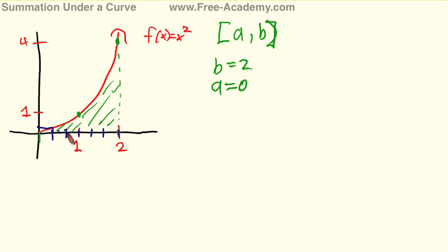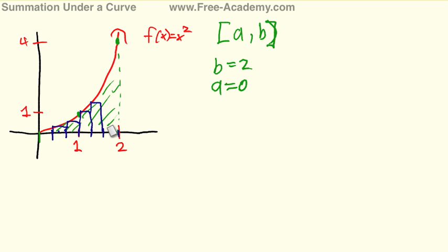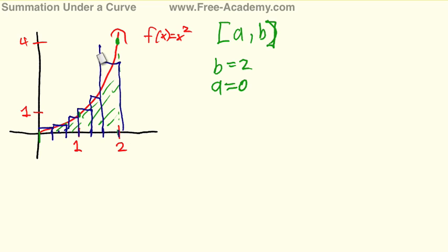We can set it up so that the right side of each rectangle equals the function, or we can set it up so that the left side of each rectangle equals the function value. Or the other thing we can do is set it up so that the middle of each rectangle equals the function value. I'm going to give you formulas for all three of these and then we're going to compare them.